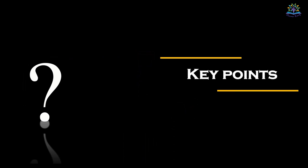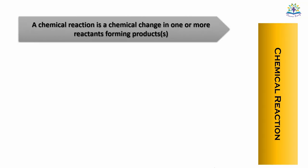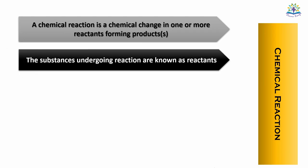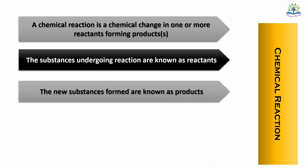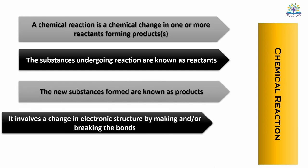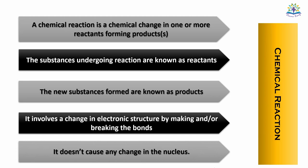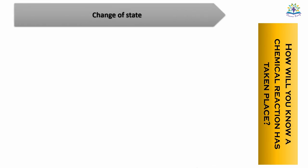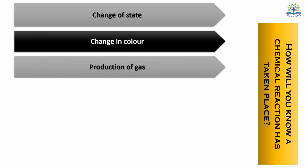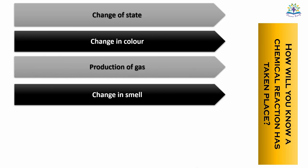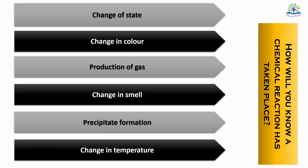Let's have a look at the key points. A chemical reaction is a chemical change in one or more reactants forming a product. The substances undergoing reaction are known as reactants. The new substances formed are called products. It involves a change in electronic structure by making or breaking the bonds and does not involve any change in the nucleus. We will know the chemical reaction has taken place by change of state, change in color, production of gas, change in smell, formation of a precipitate or change in temperature.